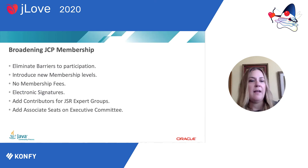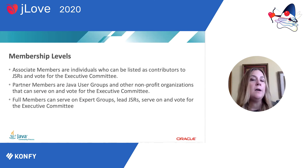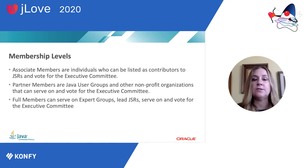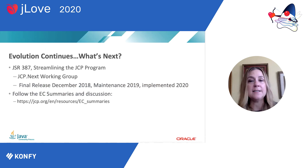What it came down to was that membership shouldn't be one size fits all — we should have different levels of membership for different ways that people want to participate. We currently have three types of membership: associate members for individuals (our largest portion), partner members for Java user groups, and full members primarily made up of corporations but also some self-employed individuals and professors. We've also streamlined the JSR development cycle to be more in keeping with a faster developer cadence and open source, continuous delivery style of software development.